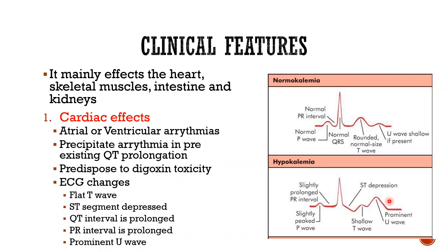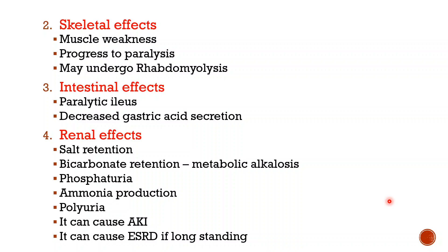Regarding skeletal effects, hypokalemia leads to hyperpolarization of skeletal muscles — they become more negative — which impairs the capacity to depolarize and contract, causing muscle weakness. This weakness may progress to paralysis. The muscle may also undergo rhabdomyolysis, releasing myoglobin, which can obstruct the kidneys and cause acute renal failure — a potential emergency.